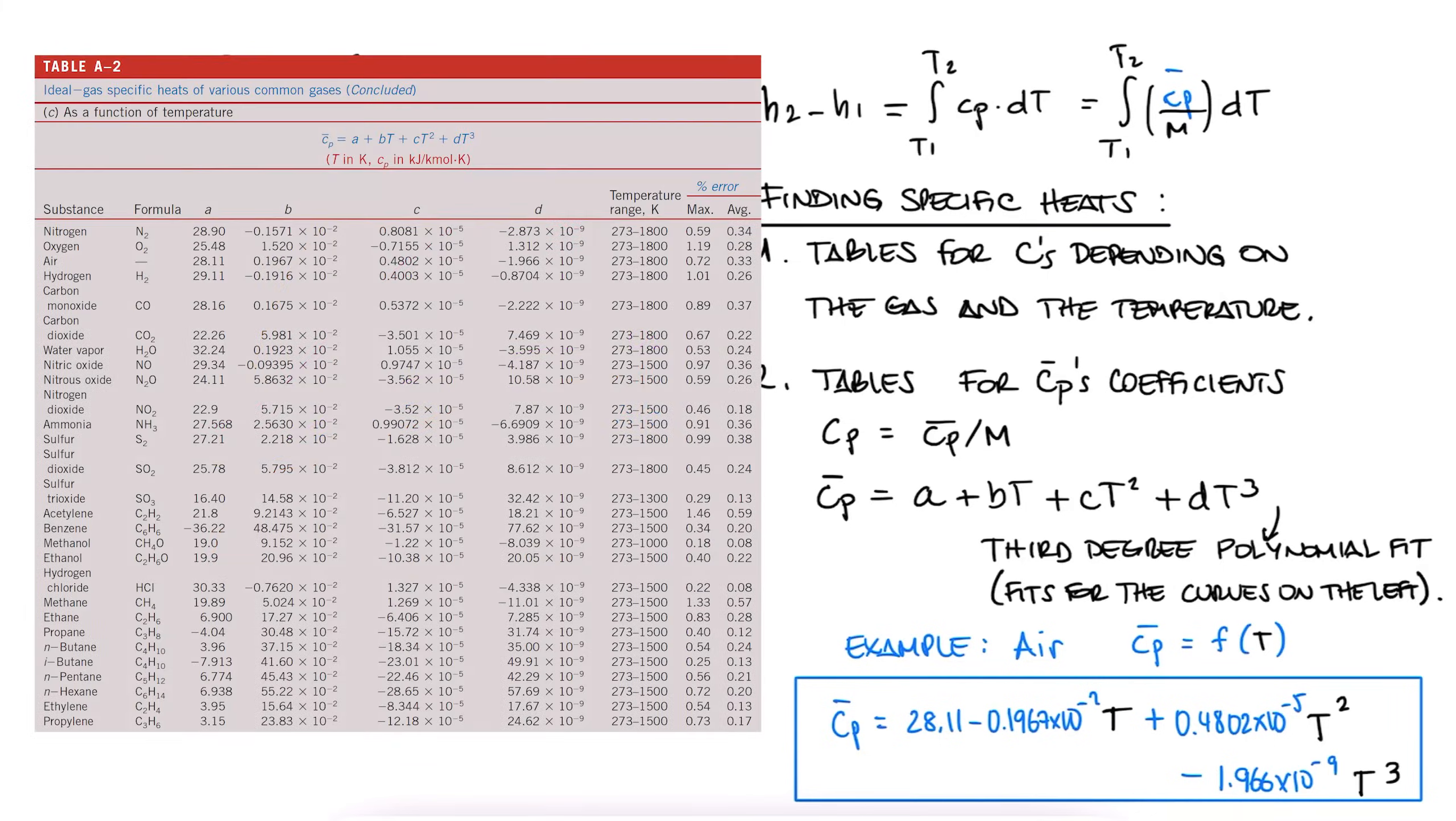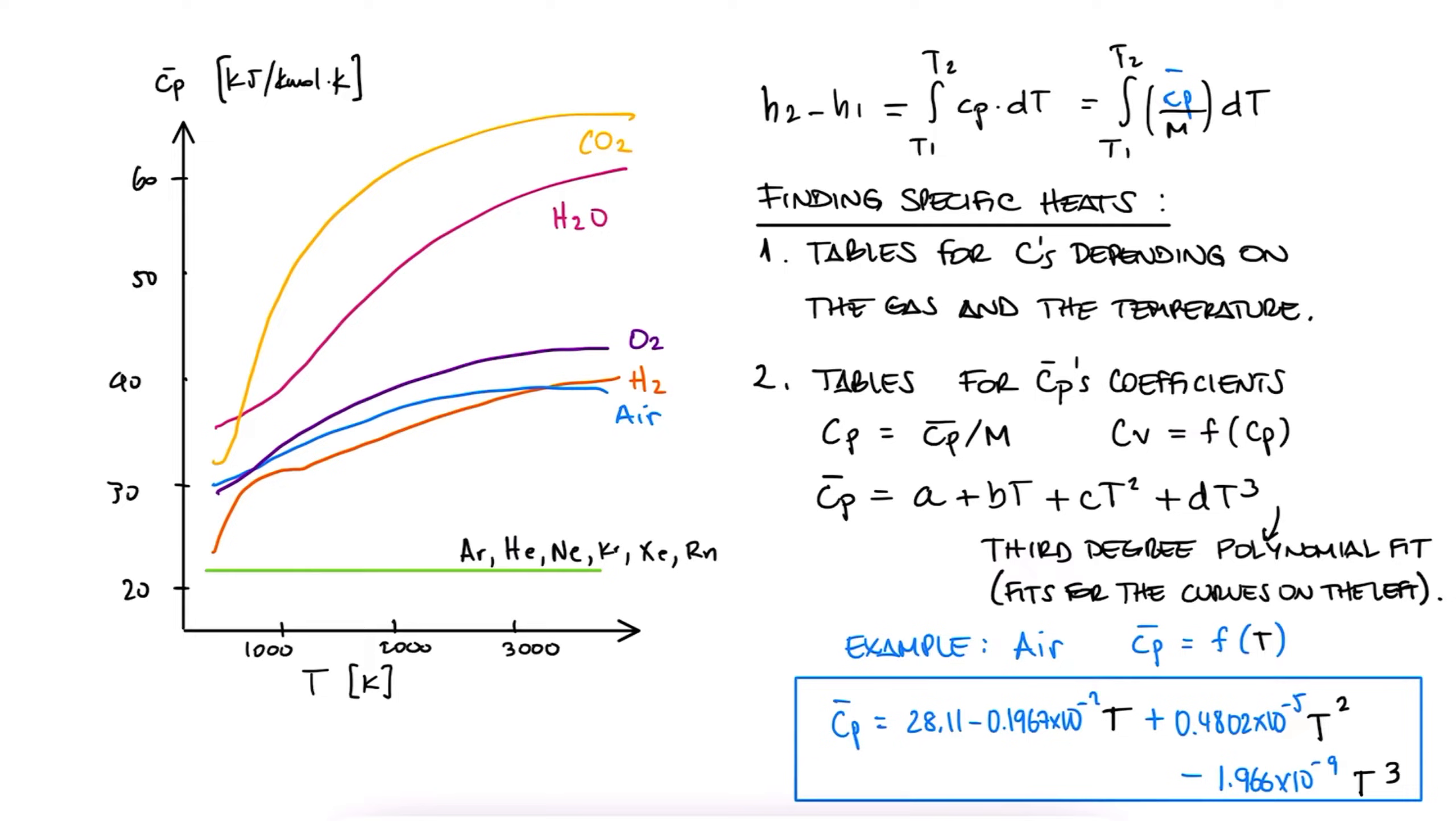And even though this table only has Cp, not Cv, we'll later learn how to get to Cv from Cp. Just know that if you have one, we can find the other.